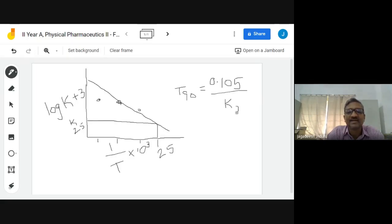Now what you have done here, you have done accelerated conditions at 40, this is corresponding to your 40 degrees centigrade, this is corresponding to your 50.